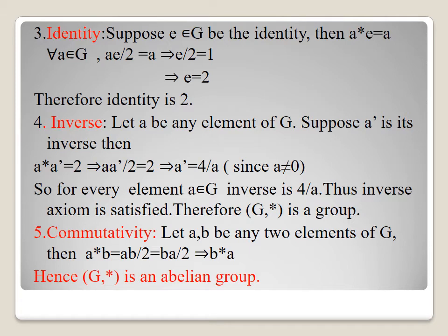Commutative property: let a, b be any two elements of G. Then a star b equals ab/2 which equals ba/2 which equals b star a. It satisfies the commutative axiom. Hence (G, star) is an abelian group.